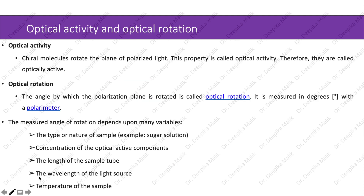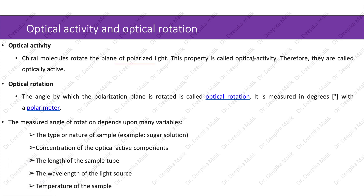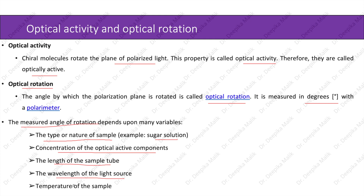Optical activity: chiral molecules rotate the plane of polarized light, and this property is called optical activity — therefore they are called optically active. Optical rotation is the angle by which the polarization plane is rotated, measured in degrees with a polarimeter. The measured angle of rotation depends on many variables: the type or nature of the sample, the concentration of optically active components, the length of the sample tube, the wavelength of the light source, and the temperature of the sample.